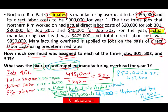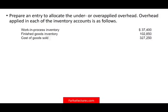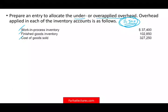We have to close the under-applied or over-applied overhead. The next question asks us to prepare an entry to allocate the under-applied overhead — which we already know is $11,500 — based on overhead applied in each of the inventory accounts. They want us to take this $11,500 and allocate it to Work in Process, Finished Goods, and Cost of Goods Sold.